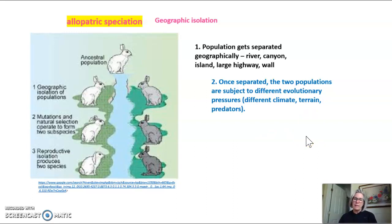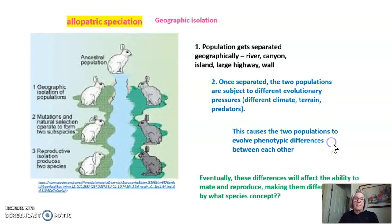They might have a different climate, they might have a slightly different terrain, they might have different predators. This is going to cause them to evolve differently. Once they've evolved different phenotypic differences between each other, they start to become different species. Eventually, these differences will affect the ability to mate and reproduce, making them completely different species.